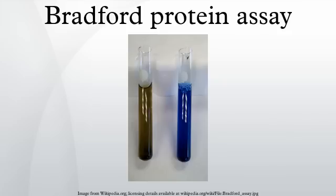Disadvantages: The Bradford assay is linear over a short range, typically from 0 to 2000 micrograms per mL, often making dilutions of the sample necessary before analysis. It is also inhibited by the presence of detergents. Much of the non-linearity stems from the equilibrium between two different forms of the dye, which is perturbed by adding the protein. The Bradford assay can be linearized by measuring the ratio of absorbances at 595 over 450 nm.